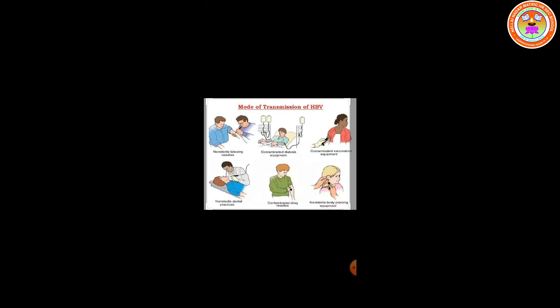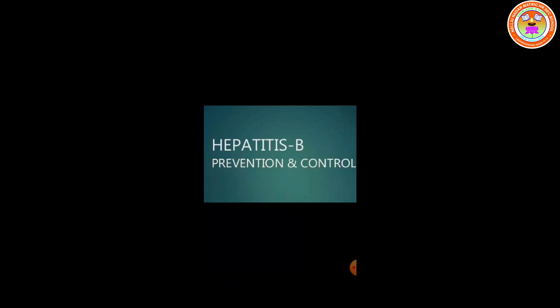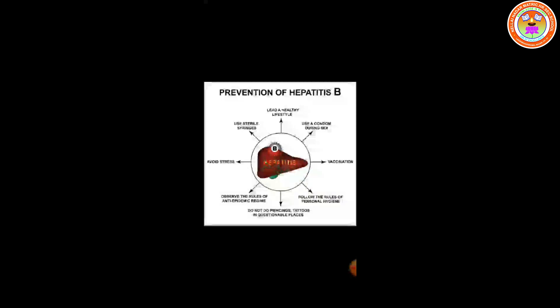Now let us see the prevention and control of hepatitis B. Screening of blood donors before blood donation can prevent transmission. Injection drug use should be prevented. Having safe and protected sex also prevents this disease. Sharing of razors should be avoided. The hepatitis B vaccine offers excellent protection against the hepatitis B virus — the vaccine is safe and highly effective.